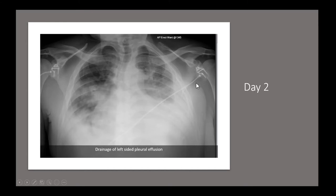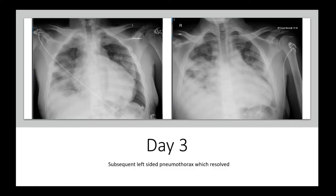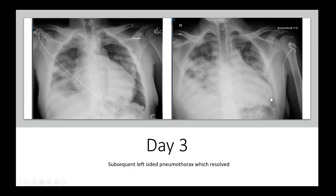ECG leads are visible on the film. On day three, the repeat chest X-ray with the chest drain still in situ shows complete resolution of the effusion, but there is a secondary pneumothorax. Sometimes with chest drains, a pneumothorax can develop if the drain is blocked or as the effusion drains. The drain was left in, and later that day the pneumothorax resolved. However, the patchy shadowing was getting worse in both lungs.